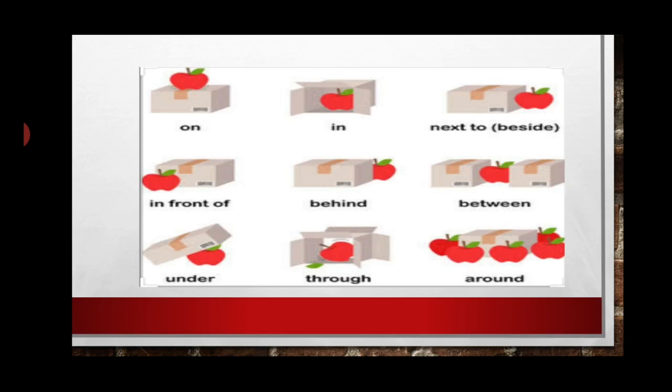So the position words — on, in, next to, beside, in front of, behind, between, under, through, around — all of these are nothing else but prepositions. They show us the exact position of the apple as well as of the box.